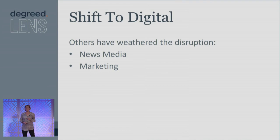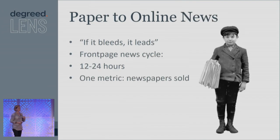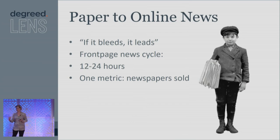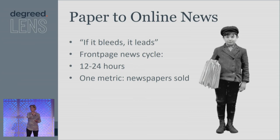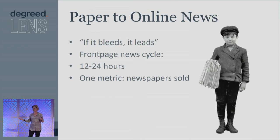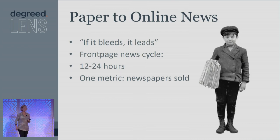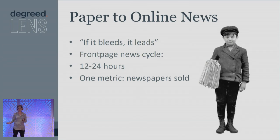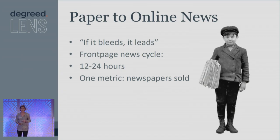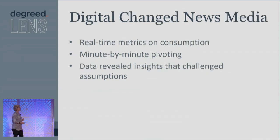The interesting thing with news media is when it first started as an editor, you were dealing with some pretty simple metrics. You had a 24-hour news cycle, or 12, depending if you were a morning and an evening paper. You were really concerned with: how many newspapers have I sold? That's it. Pretty easy. You may be looking at what your competitors are doing, but how many do you have in circulation? That used to be the big piece of data. You also had a front page news cycle which typically was — if it bleeds, it leads, right? That's what people want to hear about. You're there to sell newspapers, so that's what you focused on.